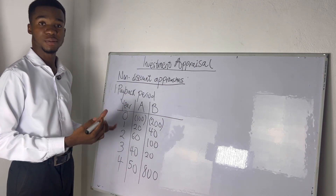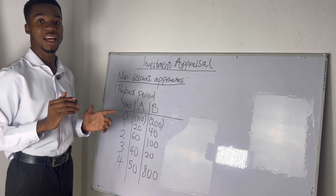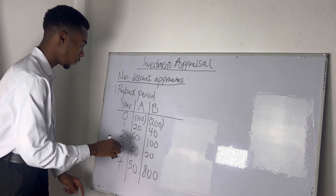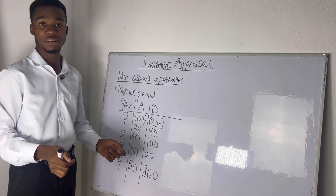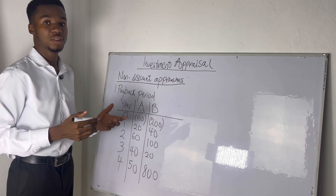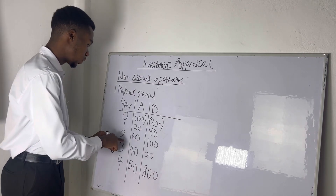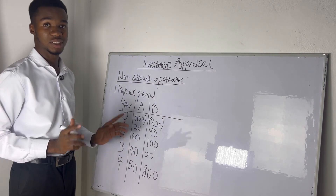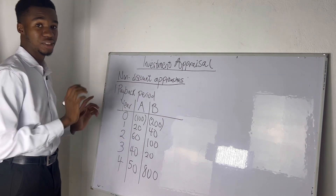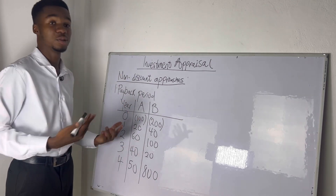They're asking which investment to go for using the payback period. Year 0 values are what you invested — shown in brackets. So Investment A has an initial investment of 100 CDs and Investment B has 200 CDs. The remaining years show annual cash flows received. We will work for each investment separately, and the one with the shortest payback period is what we choose.